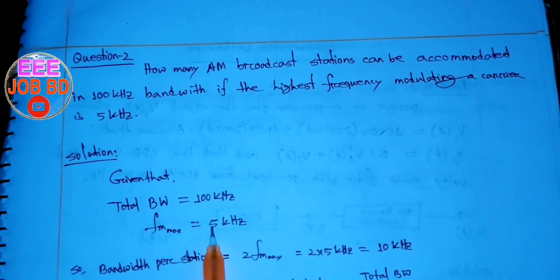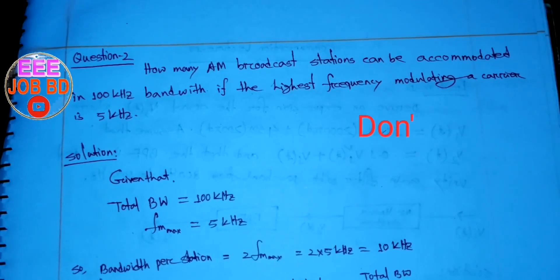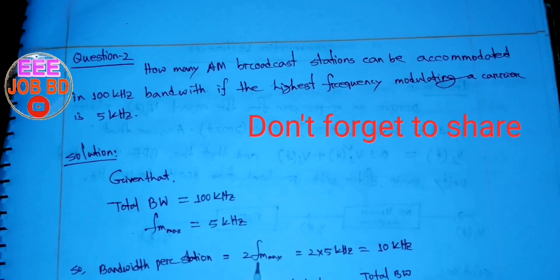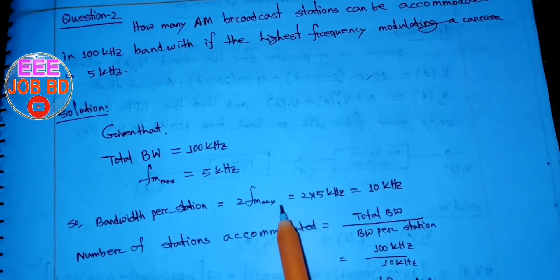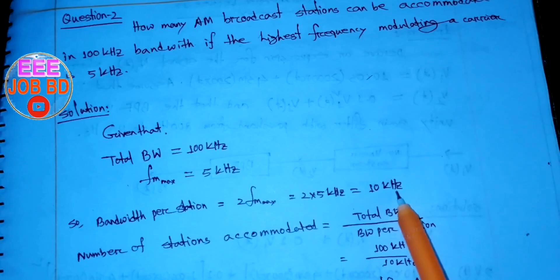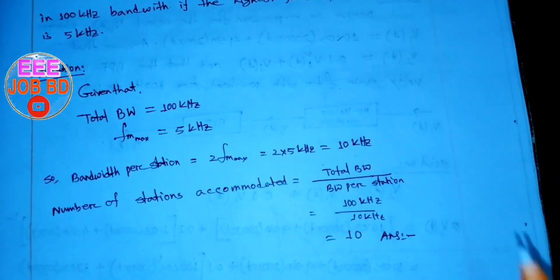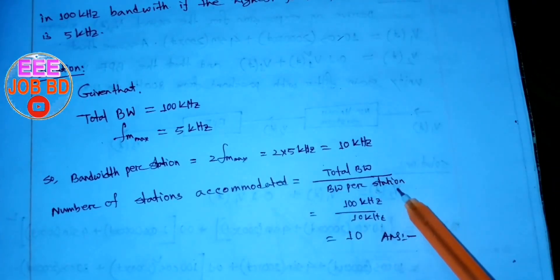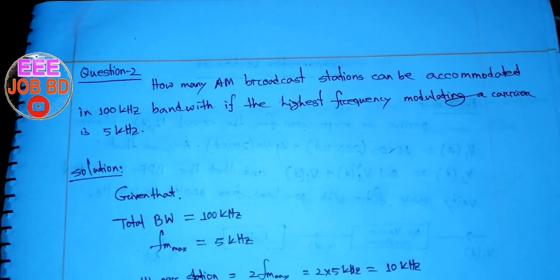The FM is 5 kHz. The modulating signal has a maximum frequency of 5 kHz. The modulating signal bandwidth is double that — the band per station is doubled. The modulating signal bandwidth is doubled.